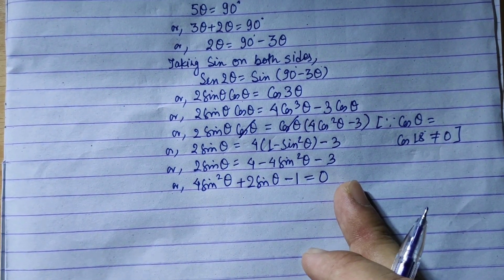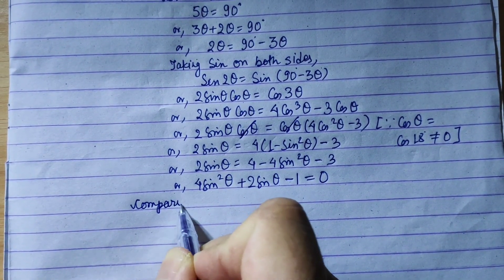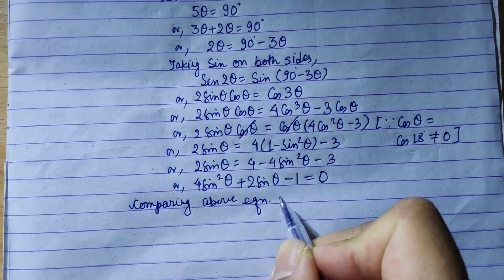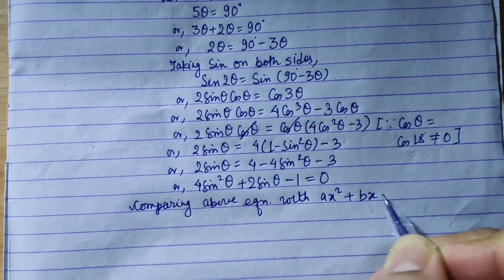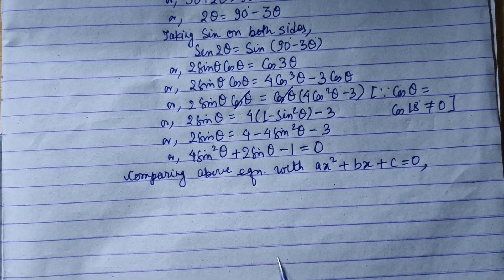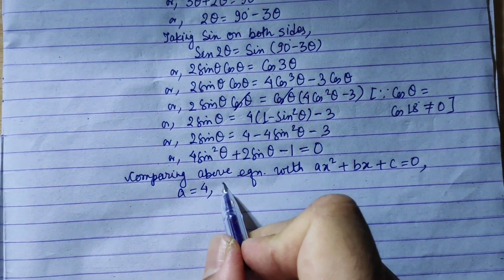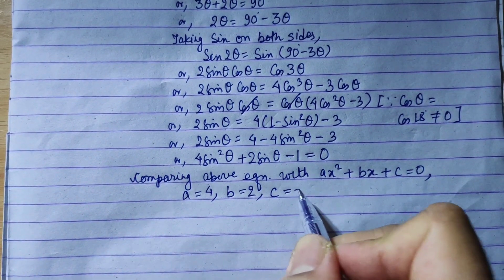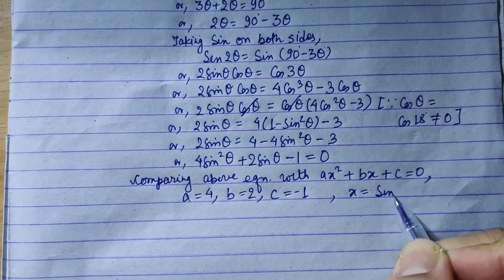Comparing above equation with ax square plus bx plus c equals 0. So a equals 4, b equals 2, c equals minus 1, and x is sin theta.